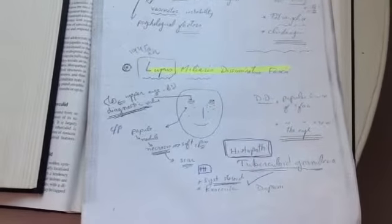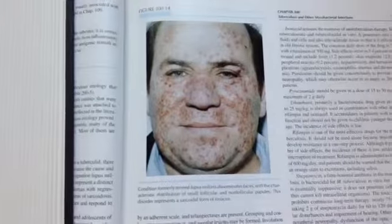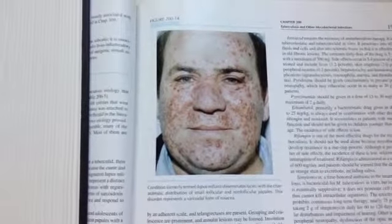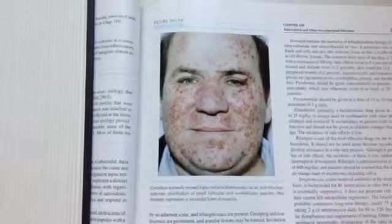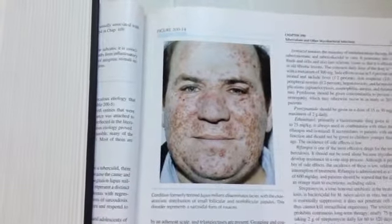Histopathology also is tuberculoid granuloma. The treatment is systemic steroid, Roaccutane, and also the Dapsone. As we can see here, the clinical picture of lupus miliaris disseminatus fasciae, the characteristic distribution of small follicular and non-follicular papules.